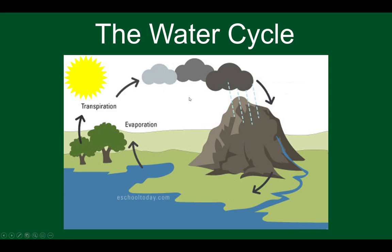What do we call that part of the water cycle? We call it condensation. Condensation is where all the water molecules come together and form clouds. Eventually things fall out of those clouds — it's a big word and it starts with the letter P. Go ahead and think about it.